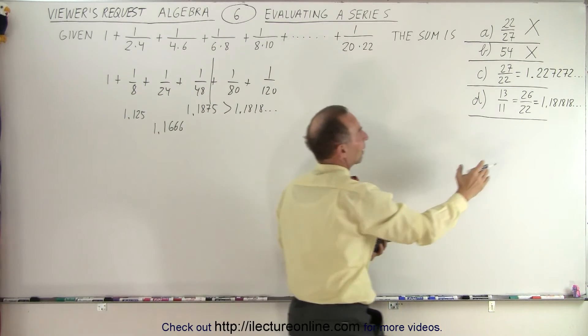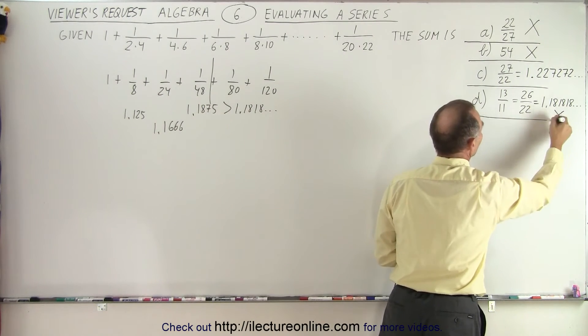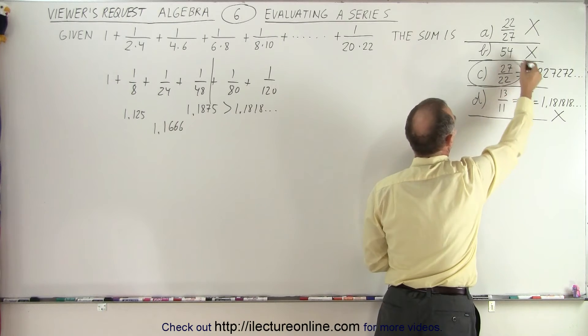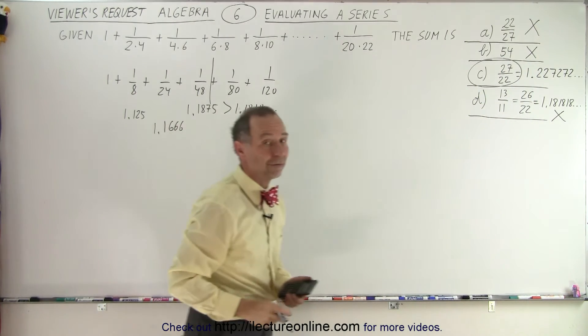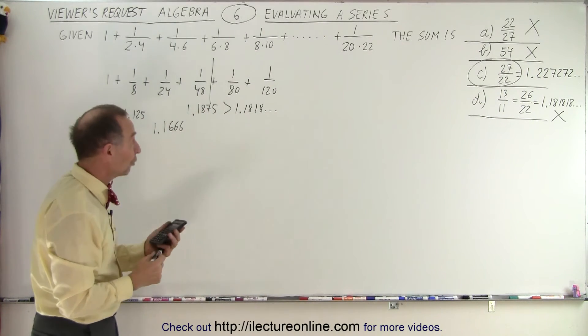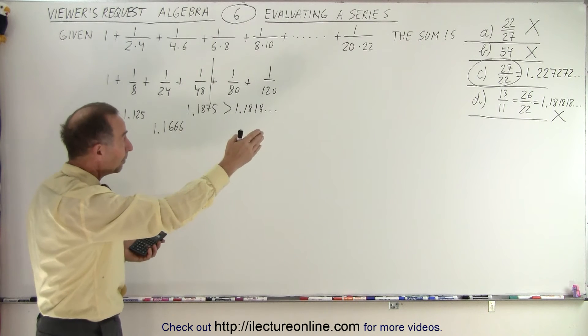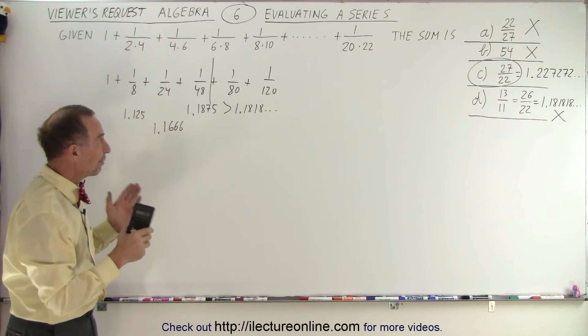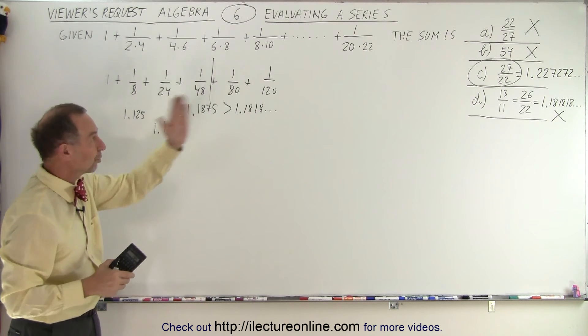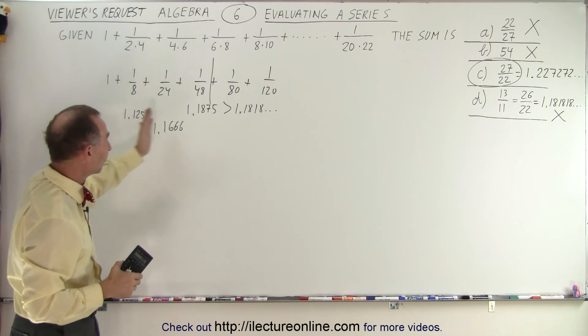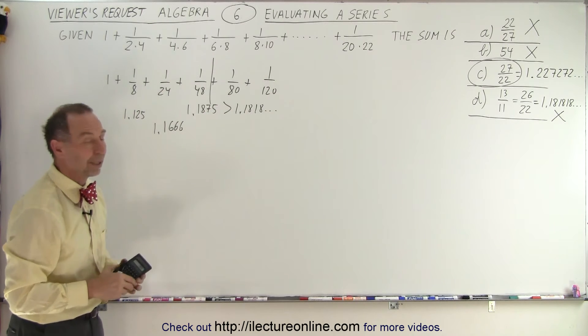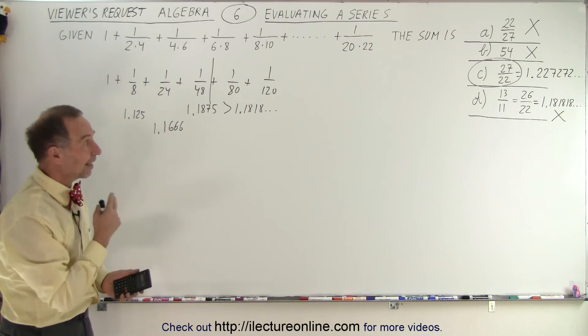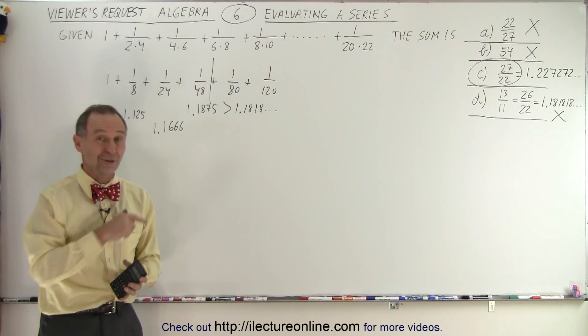And notice that this is already bigger than 1.1818 and so forth. So by the time I get to the fourth term, I've already exceeded the answer for D, which means this is not the possible answer. So the only possible answer would be C, 27 over 22. Now it turns out that if you continue adding them all up, it does indeed add exactly to 27 over 22. But you can see how you very quickly can determine which ones are not possible answers. And then very quickly, the third answer is eliminated and you only have one answer left. And that is how it's done very quickly if you're taking a test.